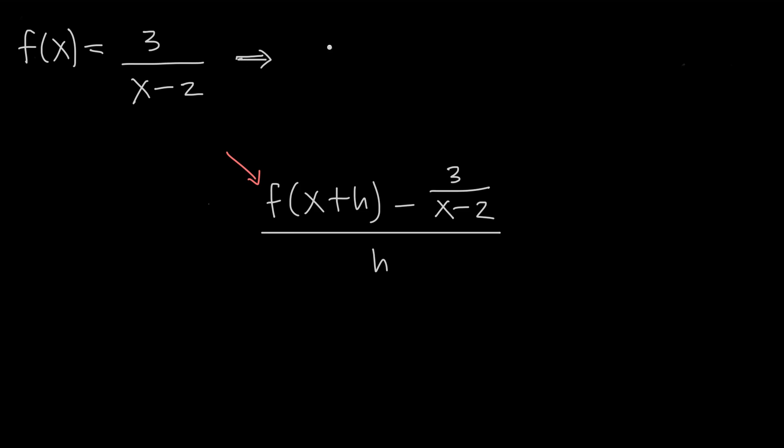Now all we need is f of x plus h. So we'll replace x with x plus h everywhere in our original function. And we'll get f of x plus h is equal to 3 over x plus h minus 2. Now we can plug this into the difference quotient formula for f of x plus h.